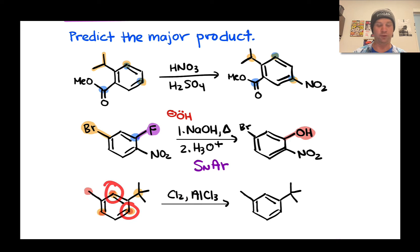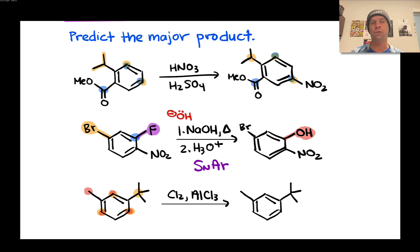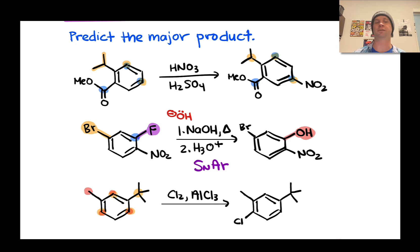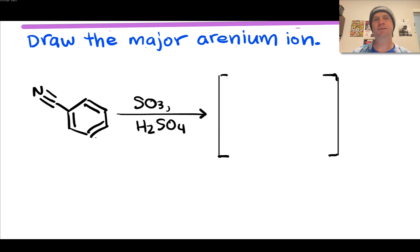This leaves the position para to the tert-butyl group and ortho to the methyl group as the major site of substitution. The product has a new carbon–chlorine bond at that position. It's an example where the steric effect — the different spatial environments of the three positions — determines the major product.